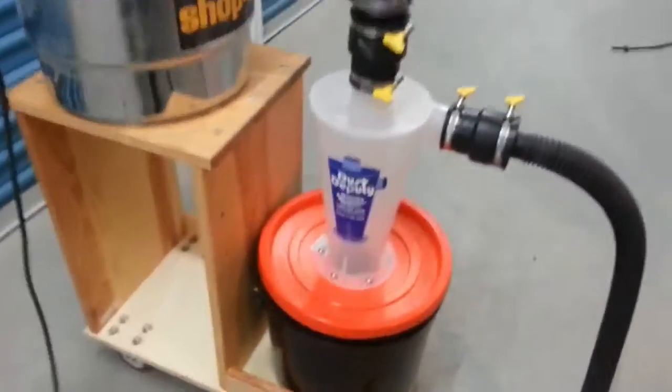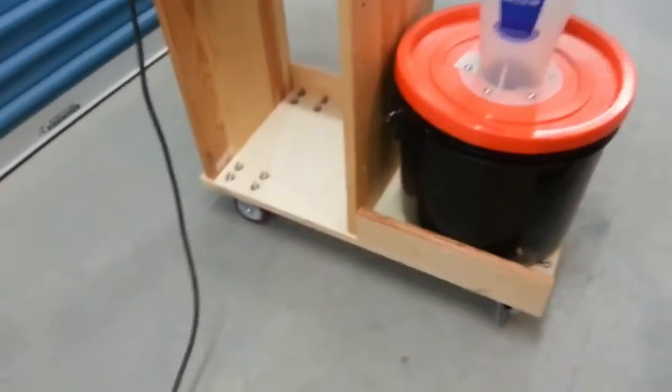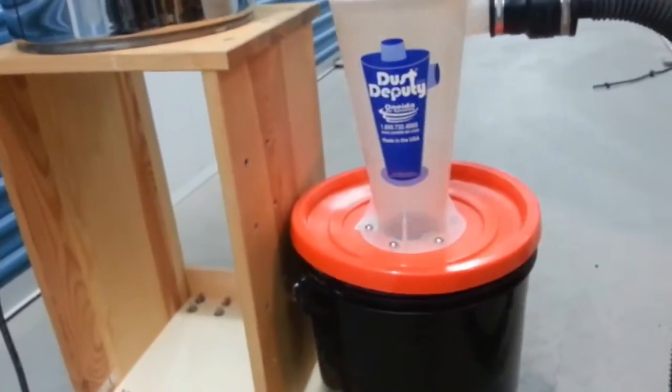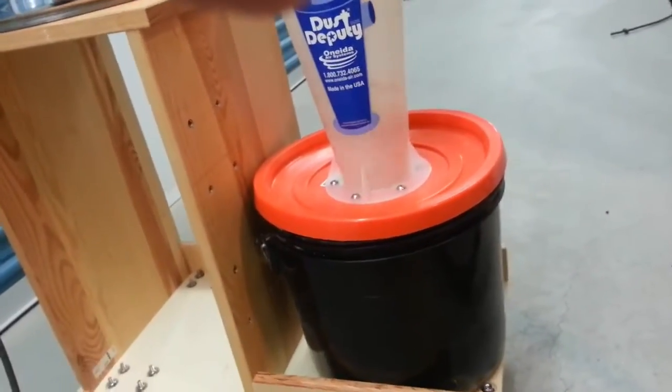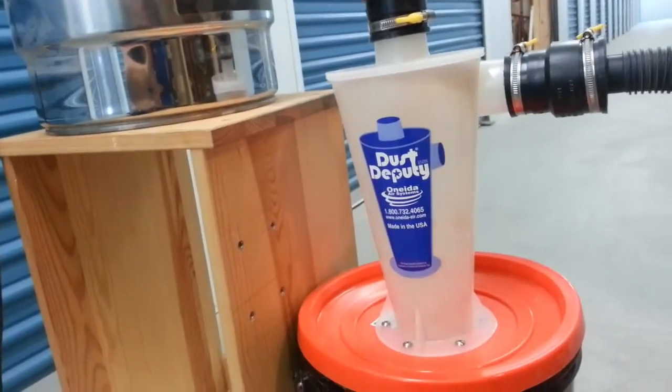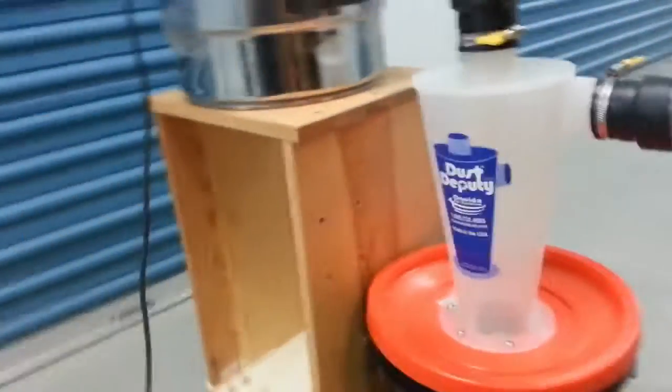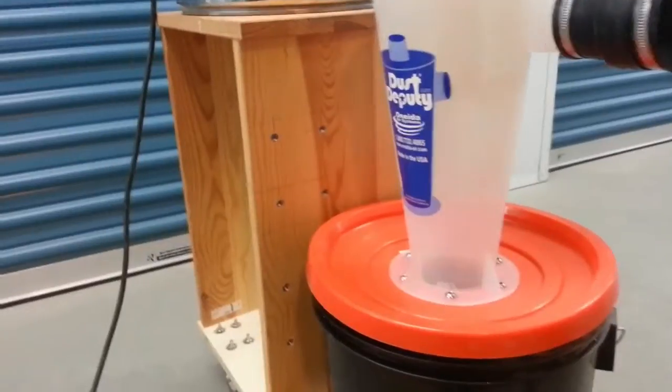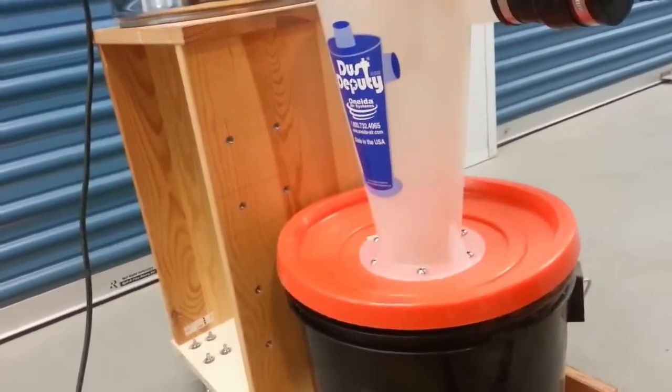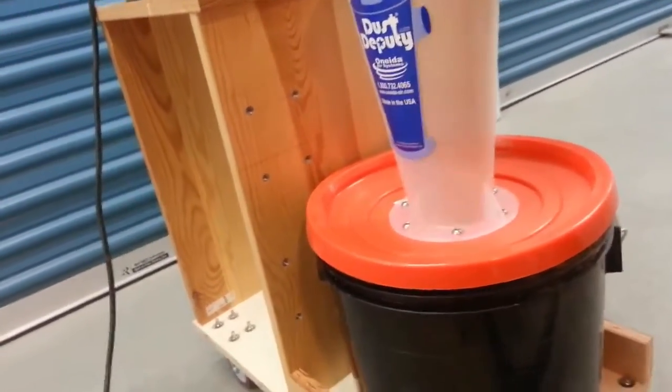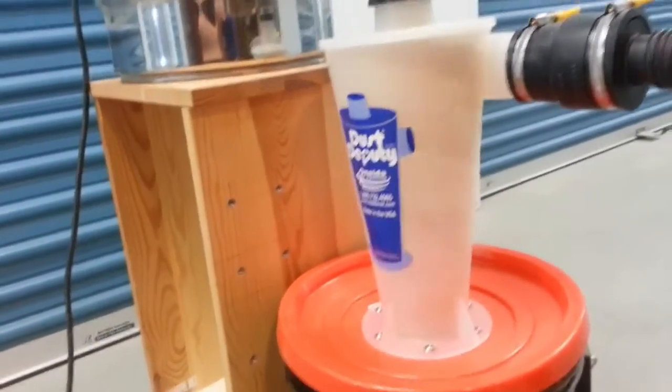And now I'm going to fire up the shop vac and suck up this dust. Maybe try to get a picture of the cyclone action and the separation process. So let's do that. Turn it on. The shop vac is on. Start sucking up the dust. You can see the cyclone sucking up all this dust, making a real storm inside, a real dust storm.